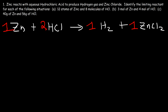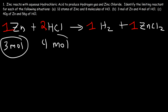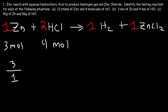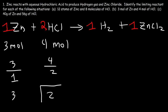In part B, we have 3 moles of zinc and 4 moles of HCl. Which one is going to run out first? You can't tell just by looking at the number of moles. You need to determine the quantity per coefficient ratio. Take the number of moles and divide by the respective coefficient: 3 divided by 1 is 3, and 4 divided by 2 is 2. HCl has a lower quantity per coefficient ratio, so HCl is the limiting reactant, even though there's a greater number of moles.